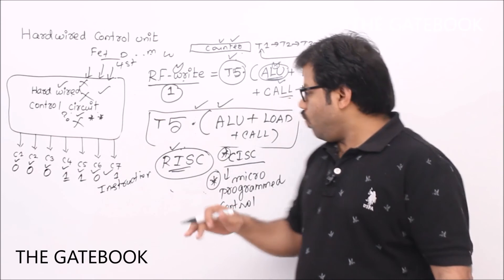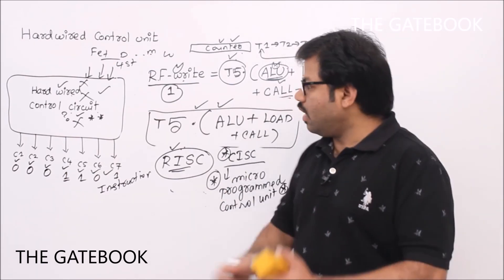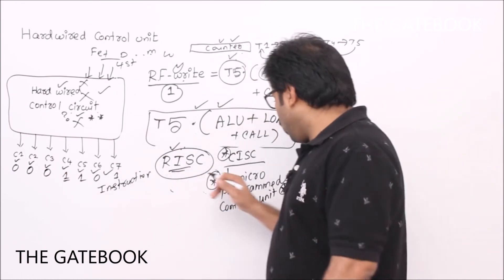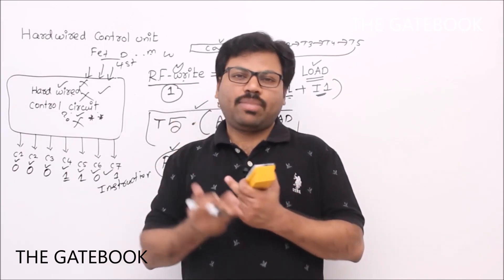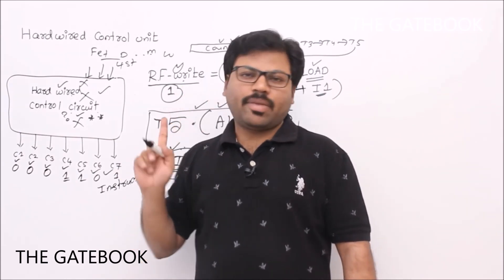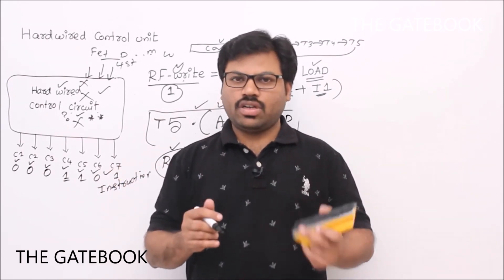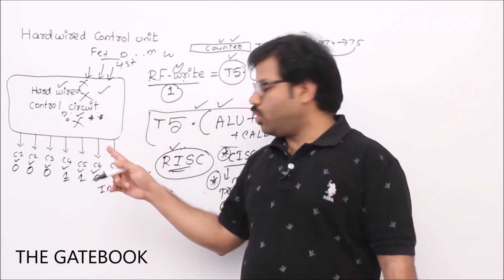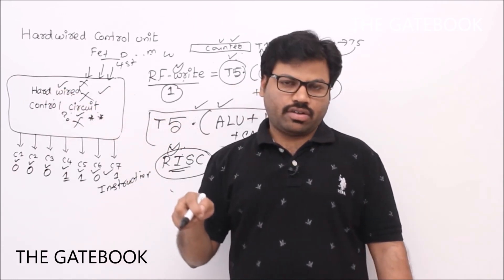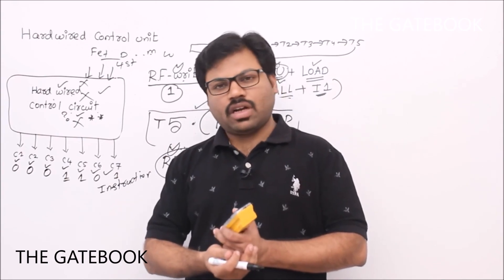But if you go for a micro-programmed control unit, you can do modifications easily because we are programming the control unit. When you hardwire, it is difficult to change. In the micro-programmed control unit, we plan it cleverly such that if you add more instructions, it still works. That's why the micro-programmed control unit is generally flexible, while hardwired is not flexible. For RISC architectures, a hardwired control unit is okay, but for CISC architectures, people use the micro-programmed control unit. We will see that next.